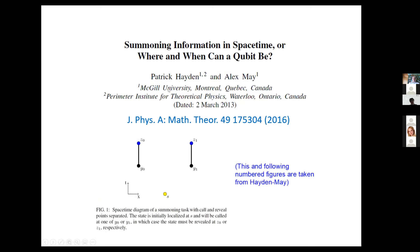This was taken further in a nice paper by Patrick Hayden and Alex May. They looked at constrained versions of summoning tasks. Now we have a start point where the state is handed over, and points where it's going to be requested — the black ones in this diagram, y0 and y1 — but there could be many. The twist is that for each request point, Alice doesn't have to return the state instantaneously; she has to return it at some associated return point in its causal future. If asked at y0, she returns at z0; asked at y1, she returns at z1.